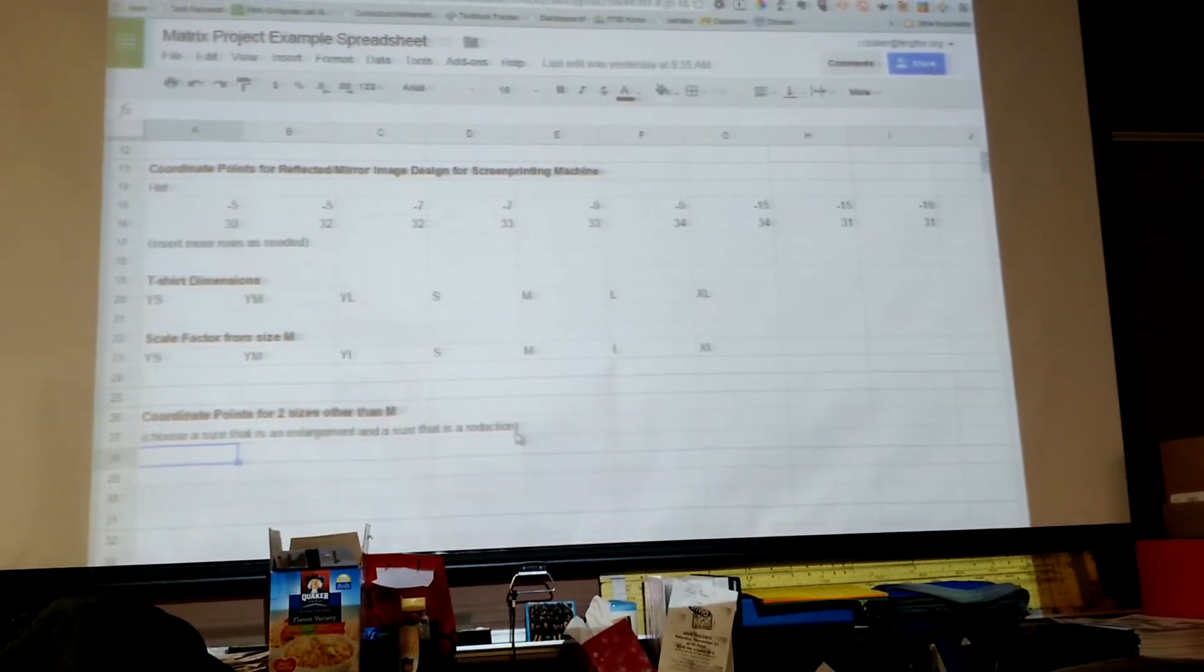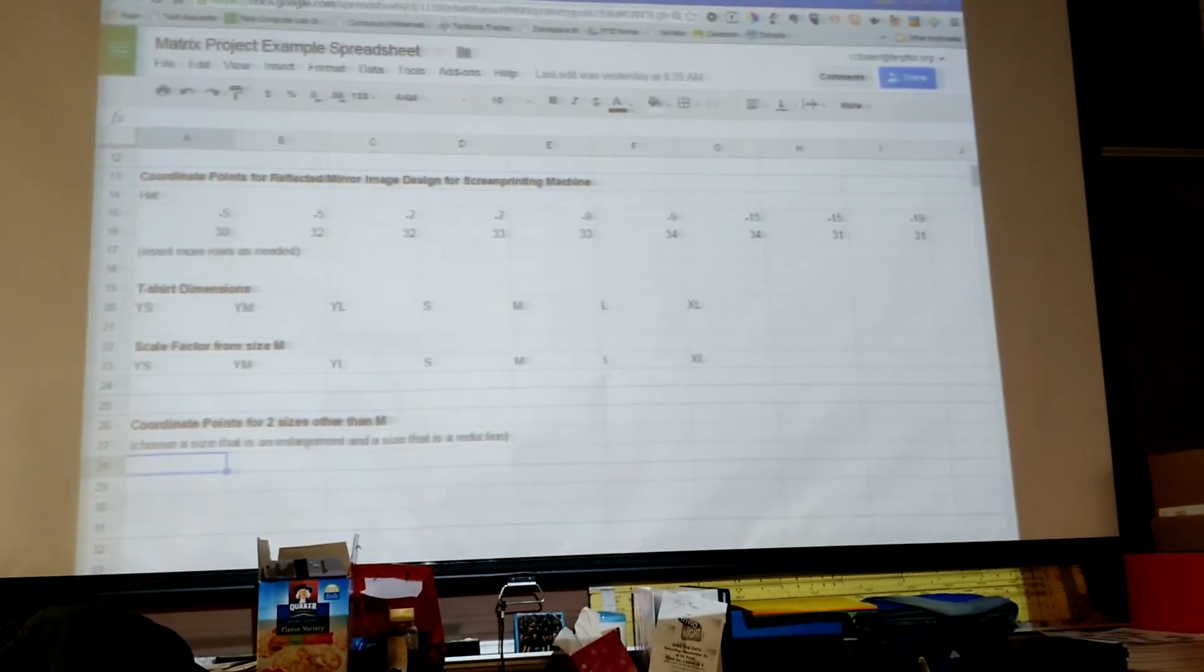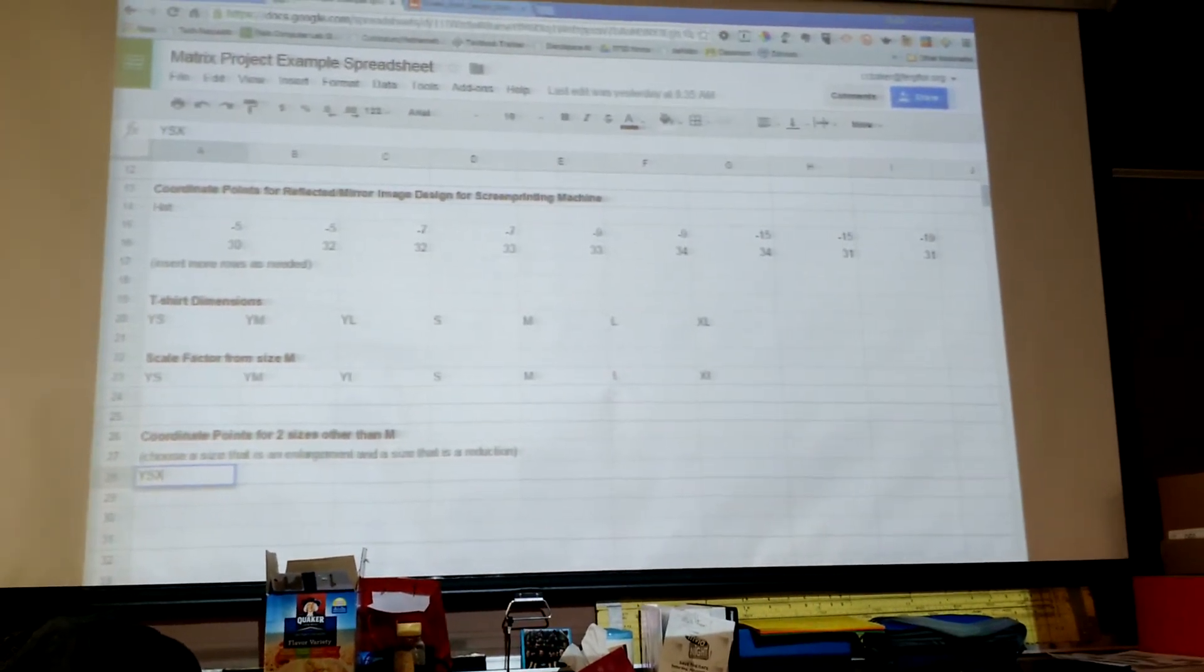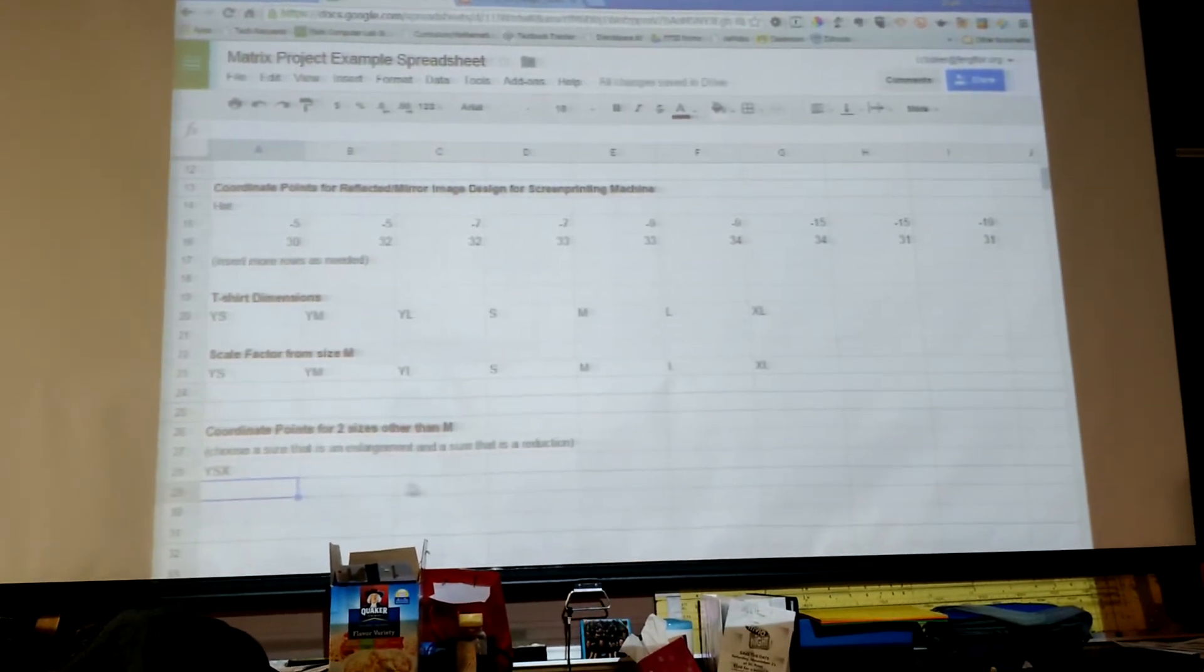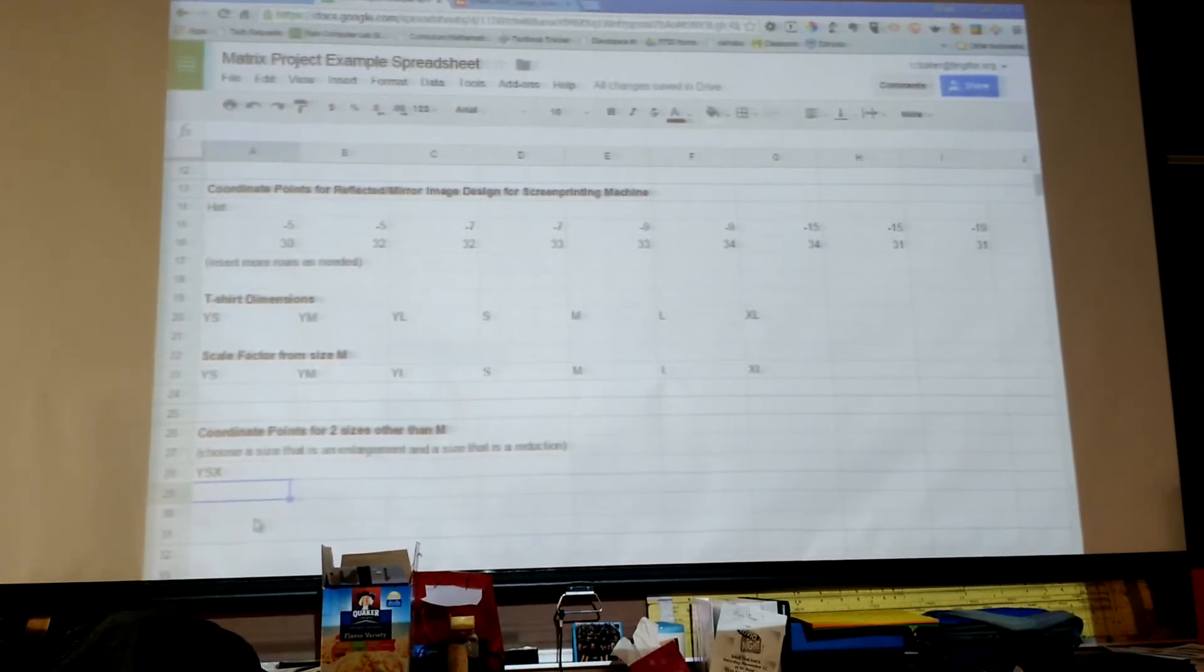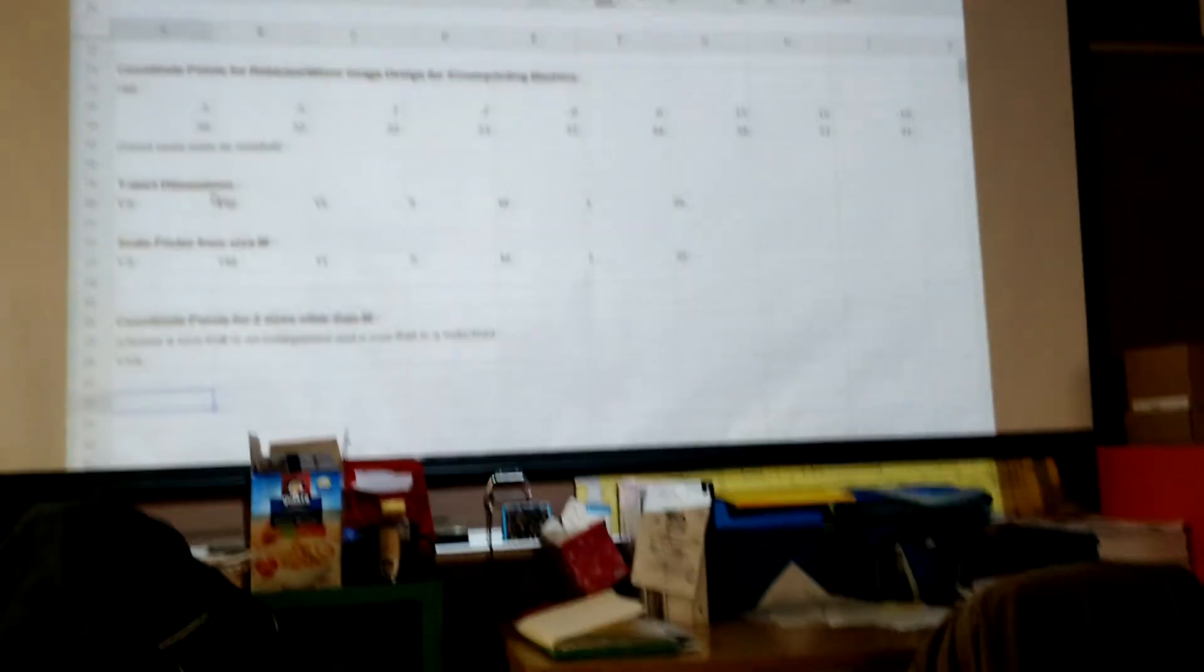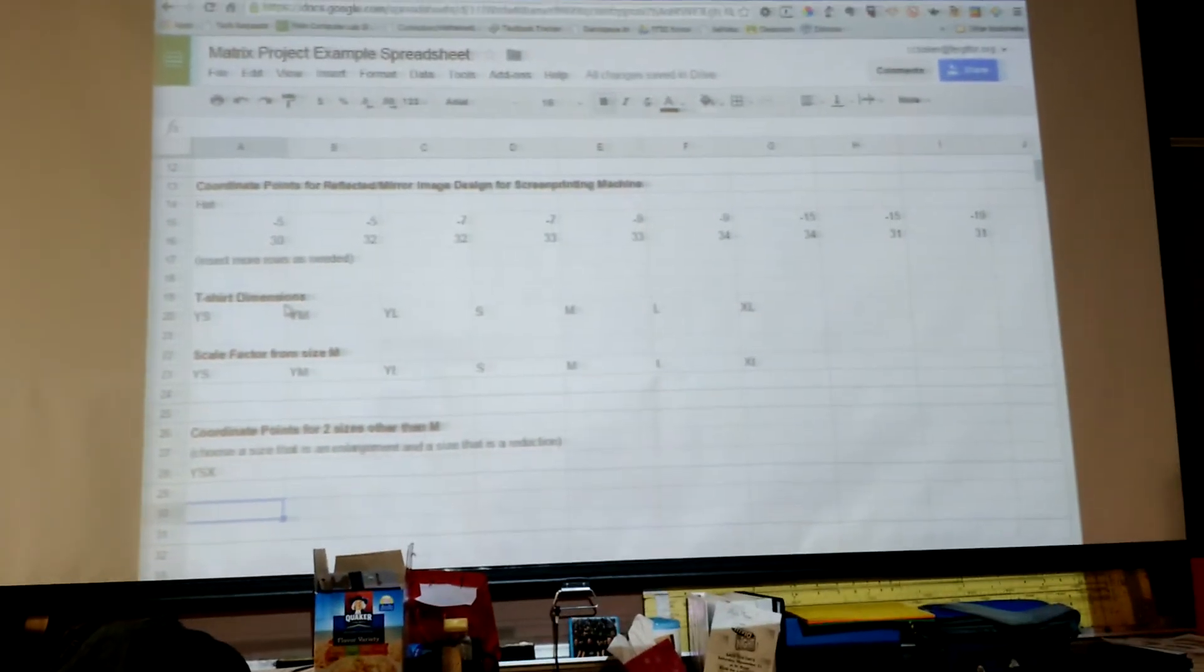Using my numbers, if I was going to do extra small, I just found that .8666. First I want you to declare what you're doing: youth extra small. Here would be a spot for all the x's, all the y's. Here I'm going to do my tall. So I need to do a formula so I can tell this to be multiplied by .8666. To do a formula, you hit equals.